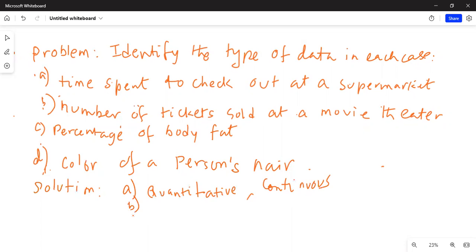Then let's start with part B. Number of tickets sold at a movie theater. Now, this is also quantitative because we're talking about number. However,